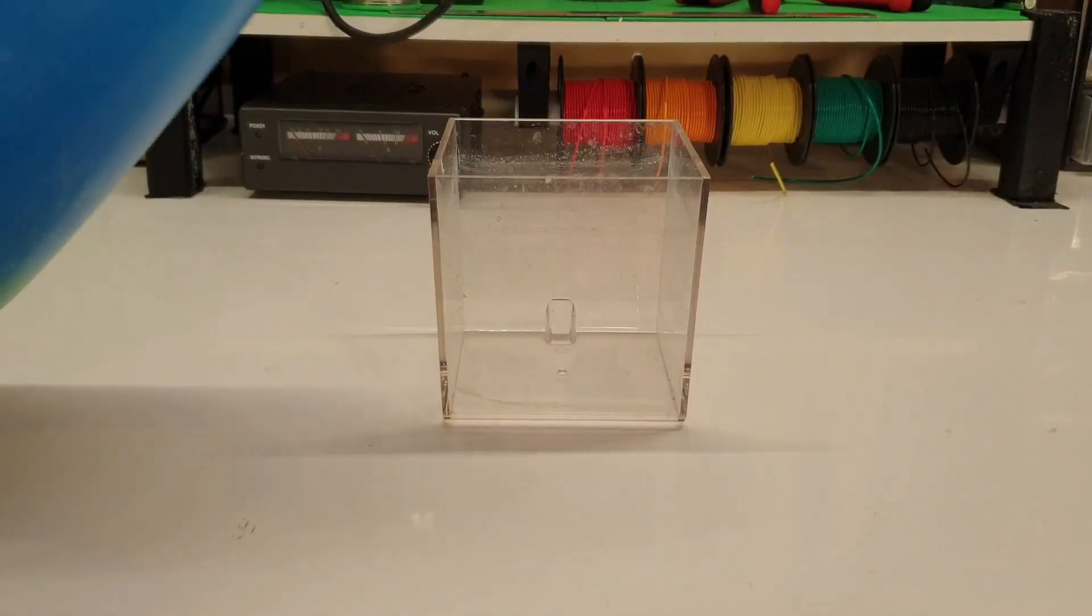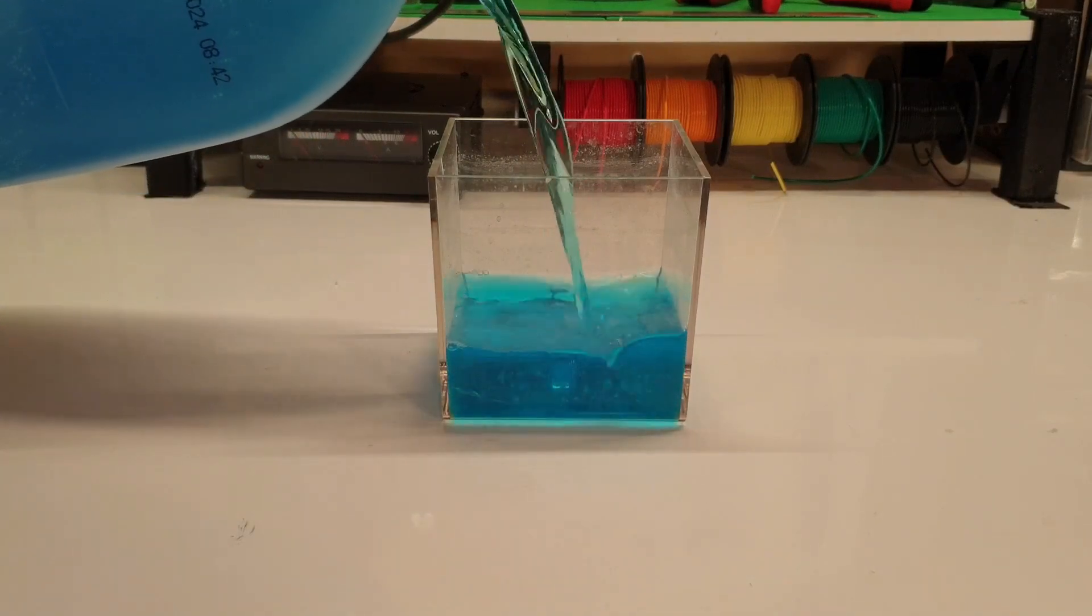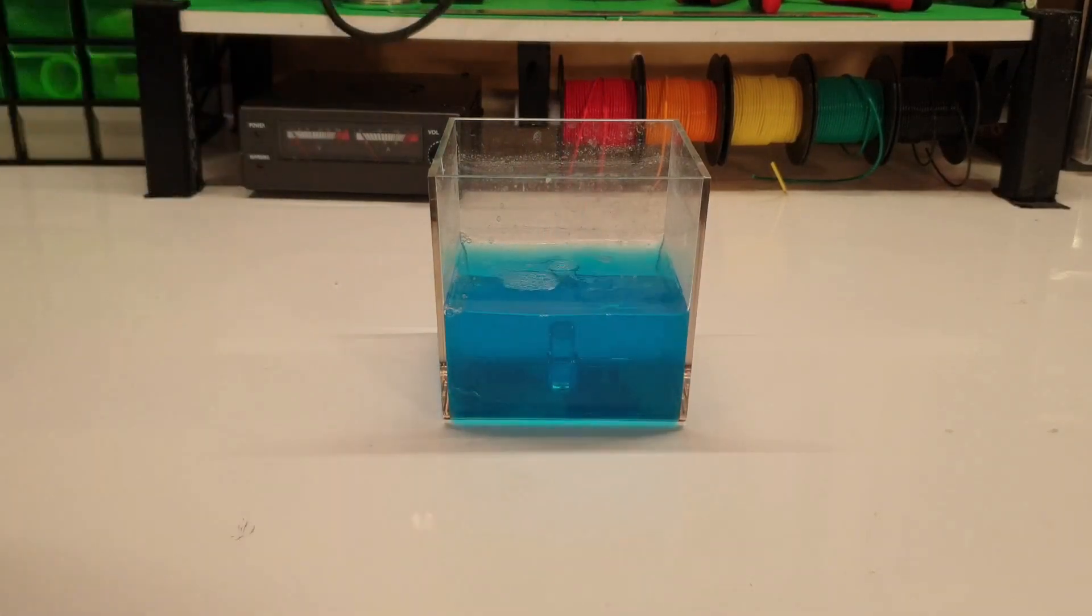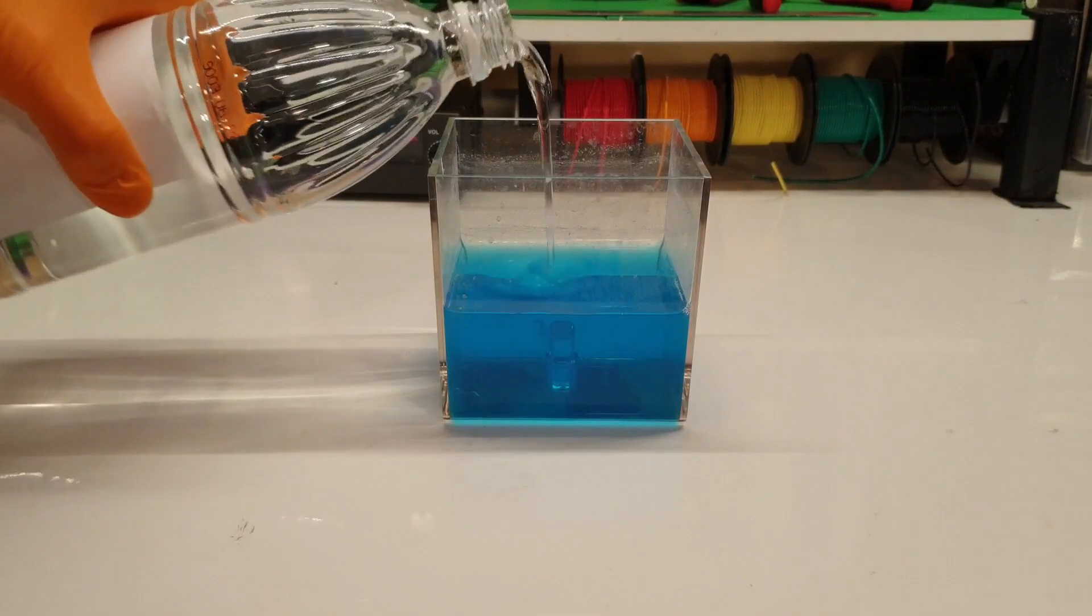Now that we've created our electrolyte and our part is prepped for plating, the fun can actually begin. Half fill a non-metallic container with the electrolyte mixture we created before. Then fill the rest of the container with vinegar.